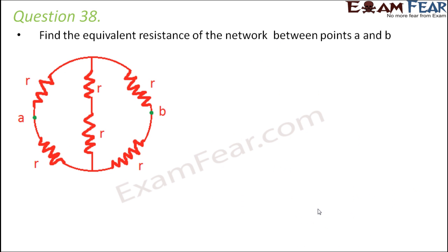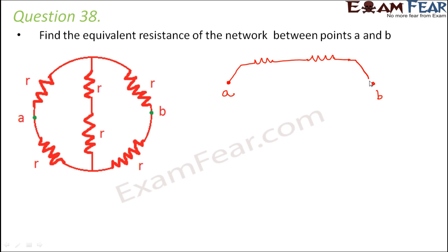Question number 38: find the equivalent resistance of the network between points A and B. Again, this is a complicated-looking circuit that is not actually complicated. Drawing the simplified version: from A, one resistance is directly connected to another resistance which connects to B — and the same thing is on the other side as well.